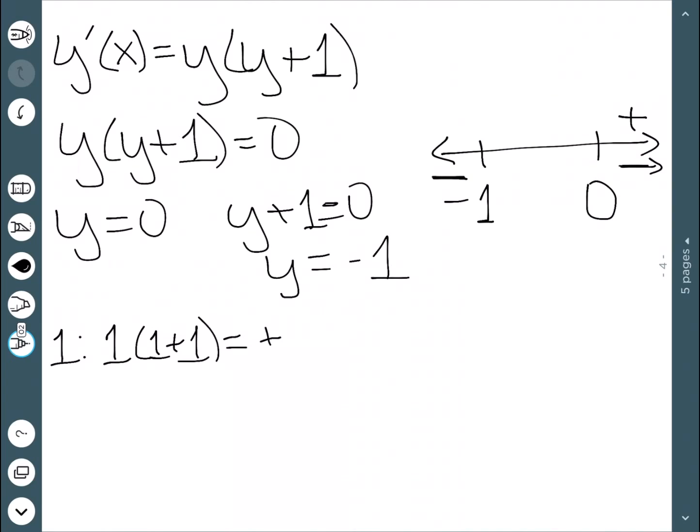If I think over here, the number is less than negative 1, like negative 2, then I would have negative 2 times negative 2 plus 1, which is going to be a negative times a negative. So those numbers are also positive.